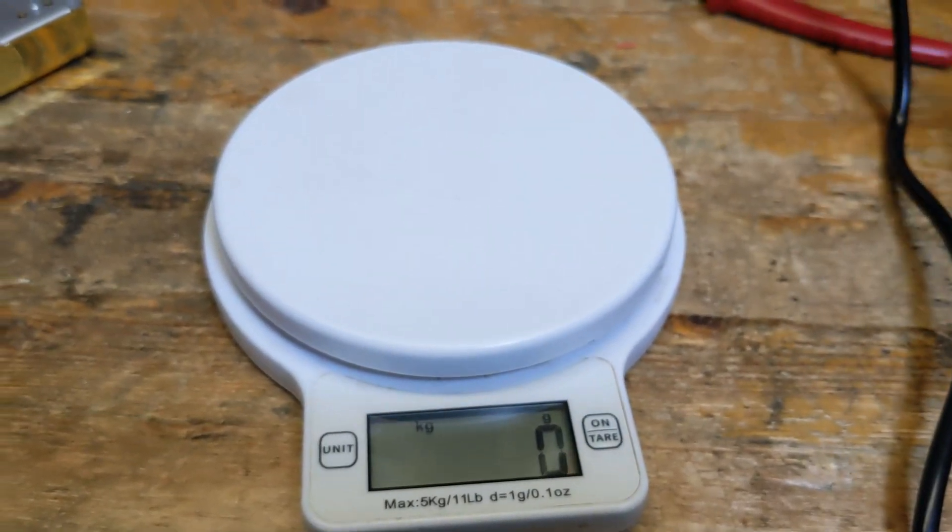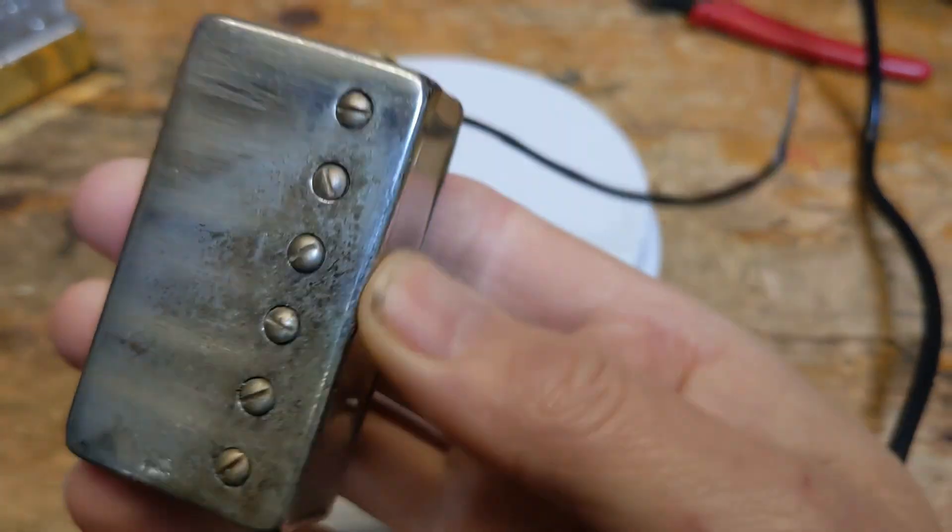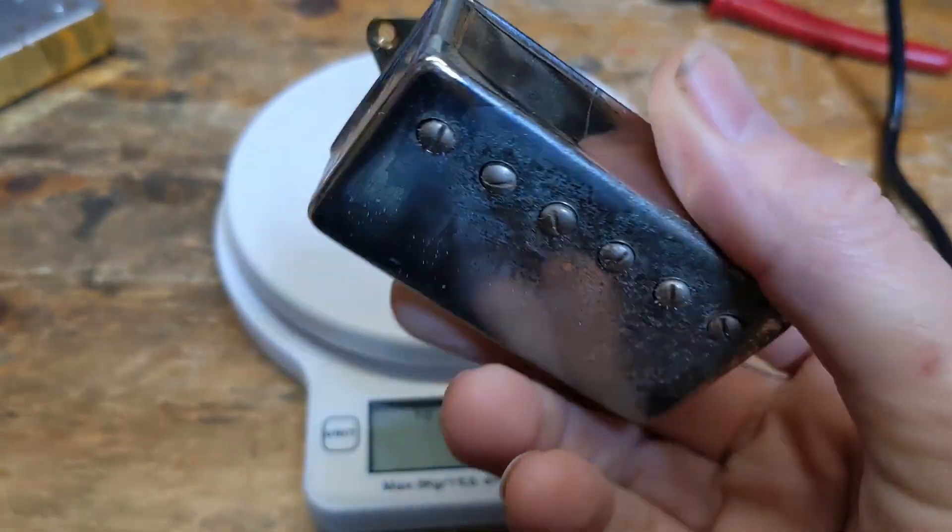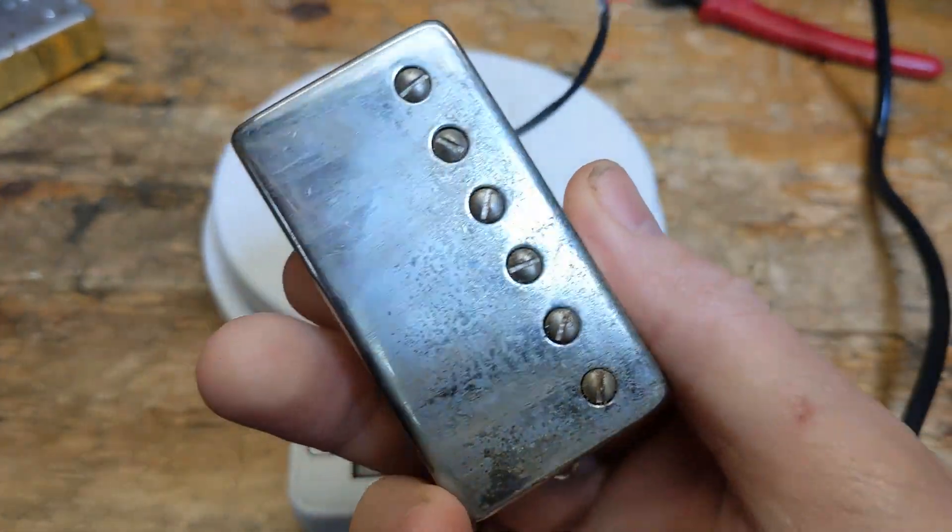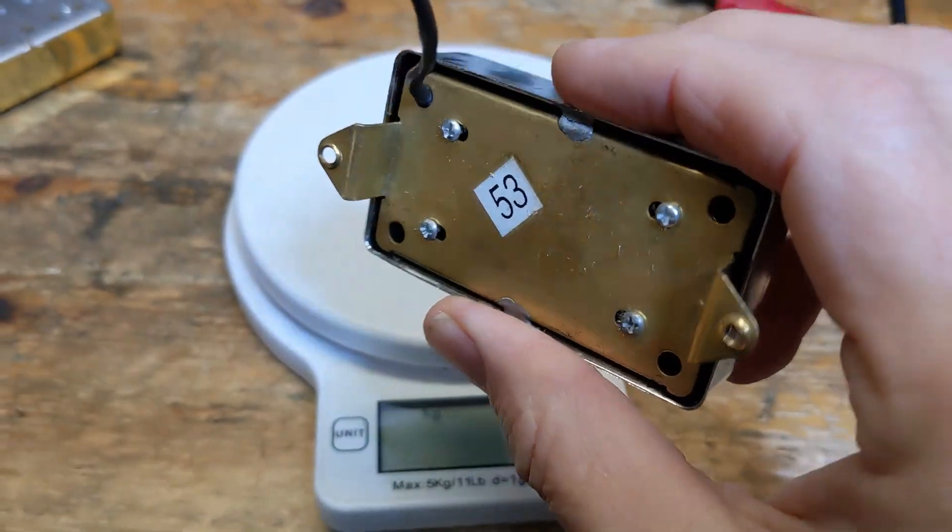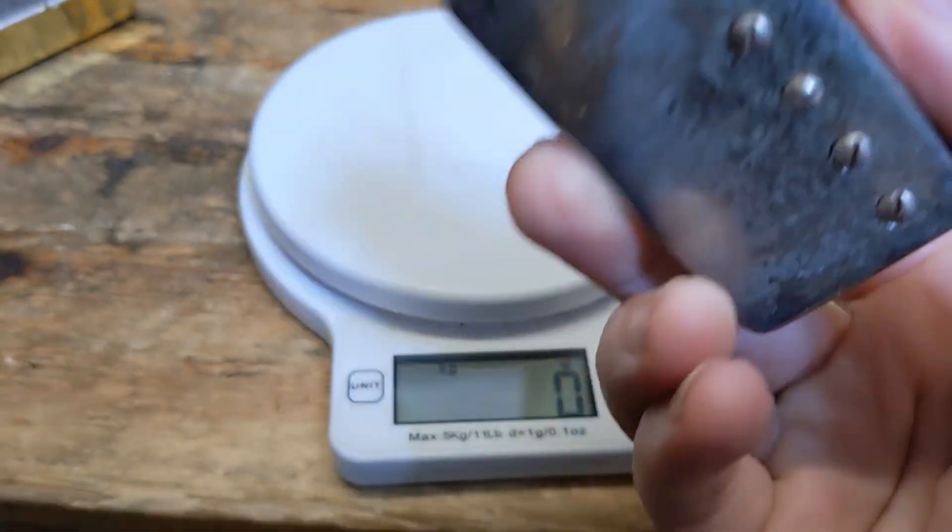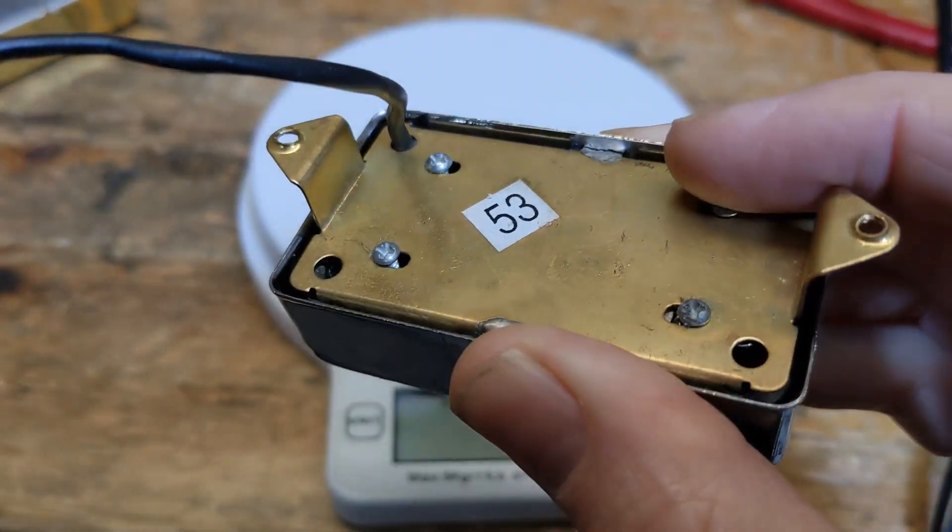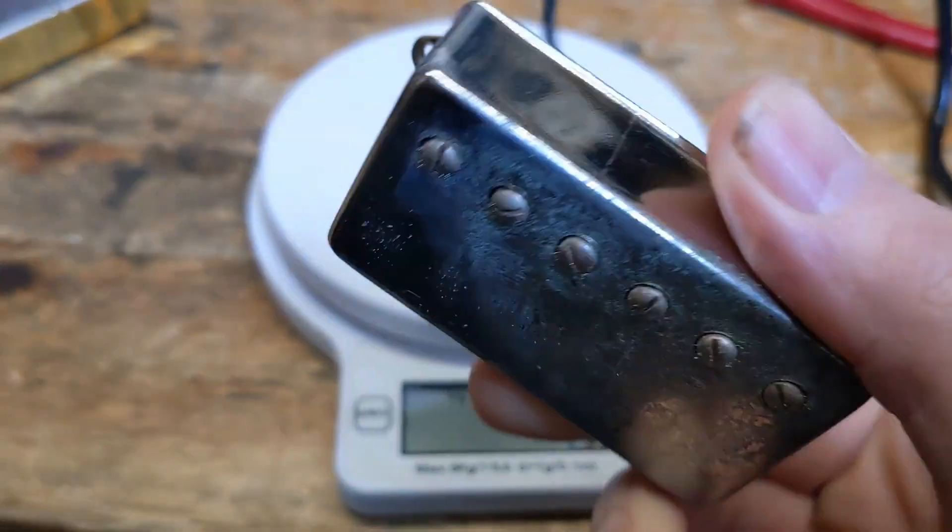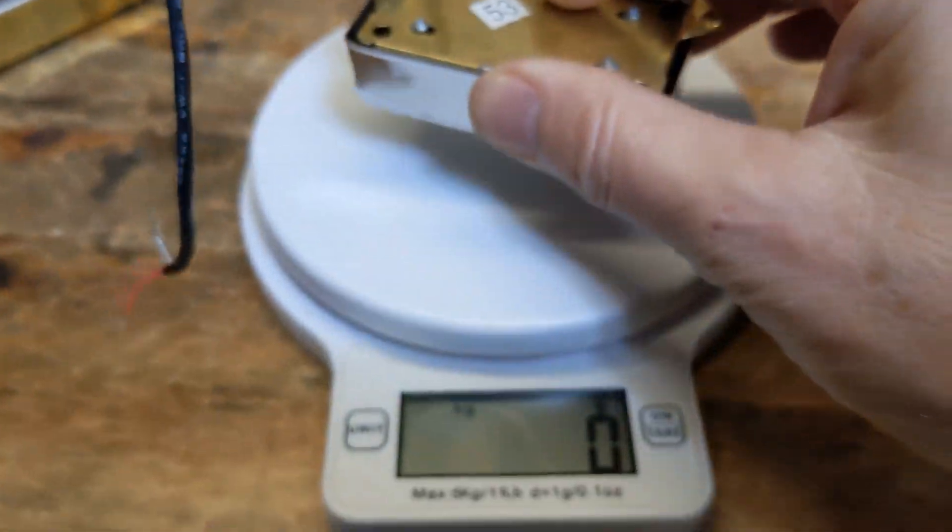Okay, first things first. Sorry about the shaky camera. This is the pickup that came off the gold top distressed Chibson I did. This one looks suspiciously Epiphone, maybe, maybe not.